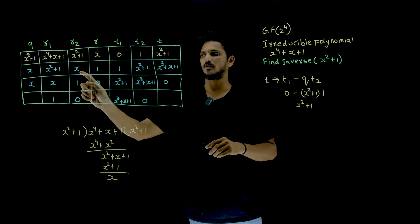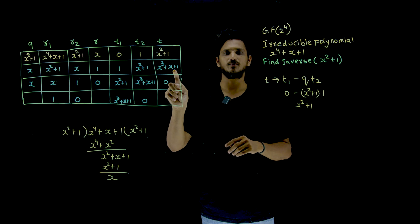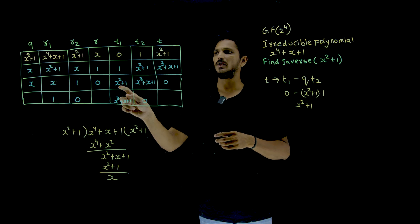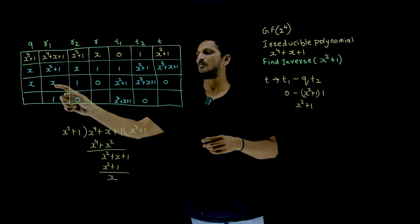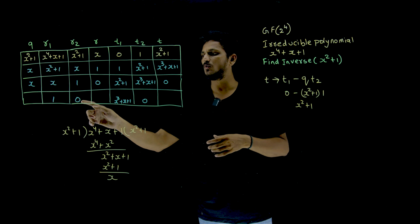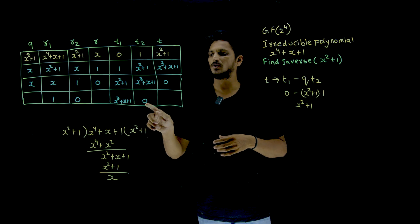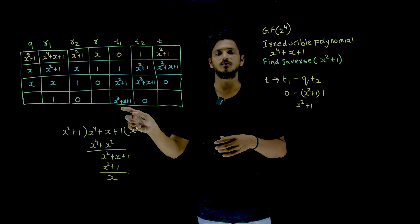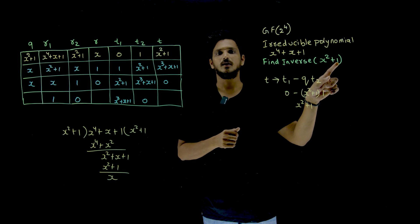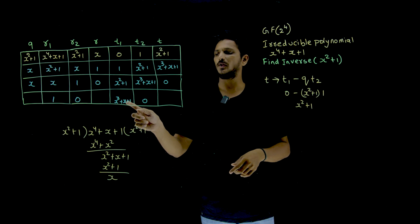Again, perform r1 divided by r2, find the quotient and remainder, then compute the new t value using the same equation. Update t2 to t1, t to t2, r2 to r1, and r to r2. Continue this process until you get a remainder of 0. Once you get 0, the t1 value you obtained at that point is the inverse element. So the inverse element of x^2 + 1 is x^3 + x + 1.